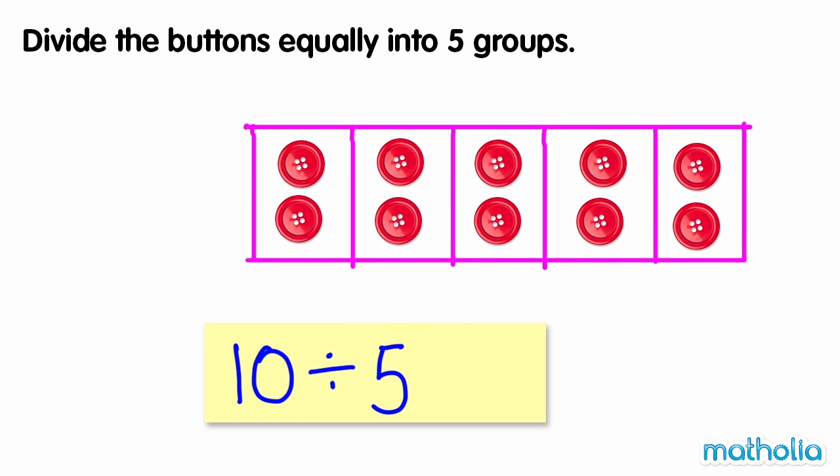We have used up all of the buttons. We have divided the buttons equally into five groups. In each group there are two buttons. So ten divided by five equals two.